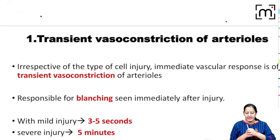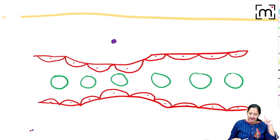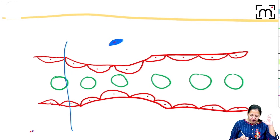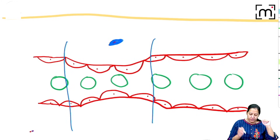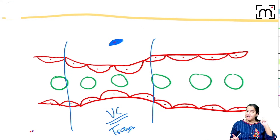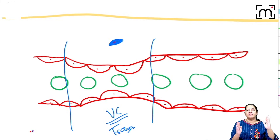The first vascular event is transient vasoconstriction. As soon as the bacteria enters the body, that portion of the blood vessel just below the bacteria undergoes vasoconstriction. This is transient — only for a few seconds. It is not diffuse; it is focal, only in the portion of the blood vessel nearest to the injurious agent.